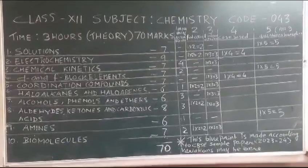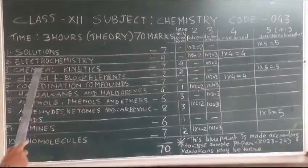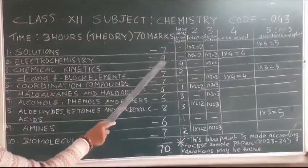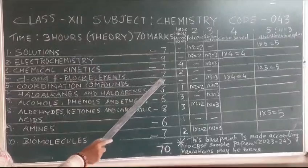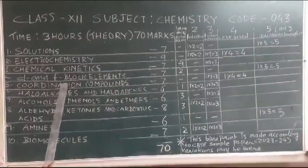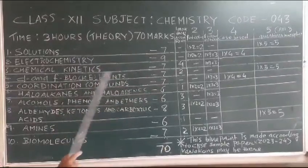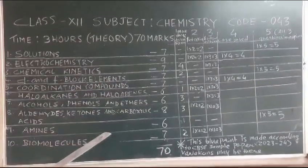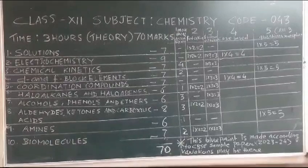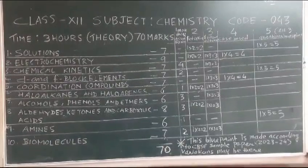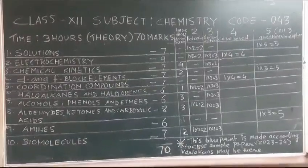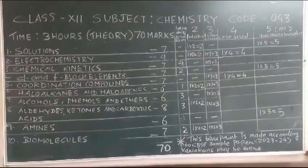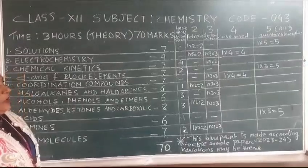Chapter 1 Solutions is 7 marks, Electrochemistry is 9 marks, Chemical Kinetics is 7 marks, D and F block elements 7 marks, Coordination Compounds 7 marks, Haloalkanes and Haloarenes 6 marks, Alcohols Phenols and Ethers 6 marks, Aldehydes Ketones and Carboxylic Acids 8 marks, Amines 6 marks, Biomolecules 7 marks. The total weightage is 70 marks.